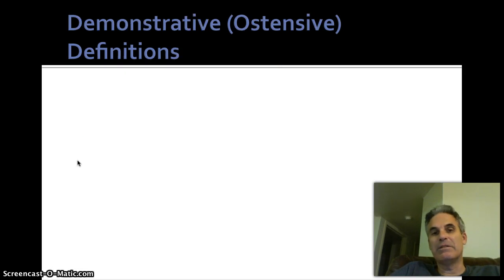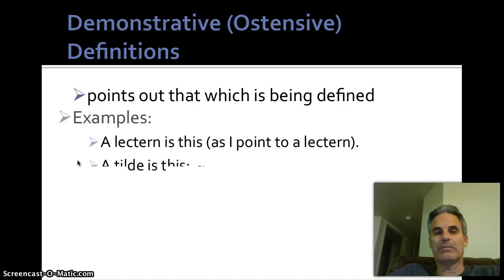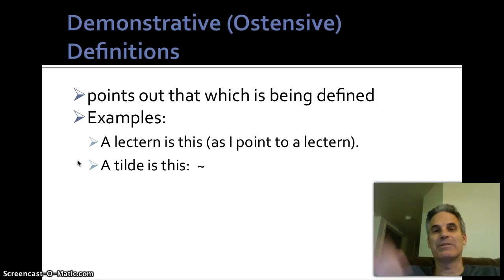The first type is a demonstrative or ostensive definition. That points out that which is being defined, so you demonstrate or you point to the thing that you're defining. Example, a lectern is this, as I point to a lectern. Now, I usually do this in the classroom, and I don't have a lectern in my apartment yet. Anyway, I'm looking for a lectern and a whiteboard just to keep at home.